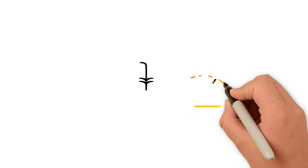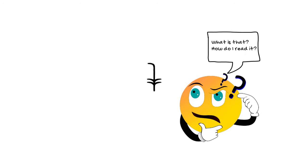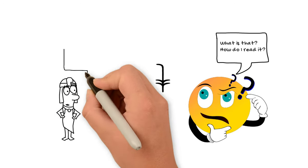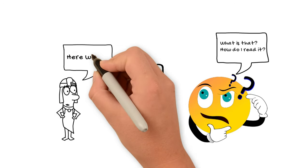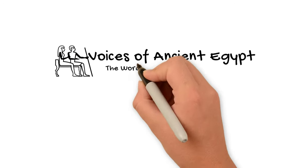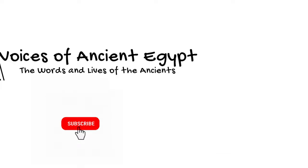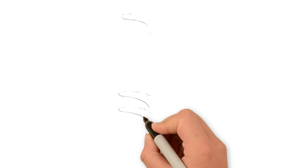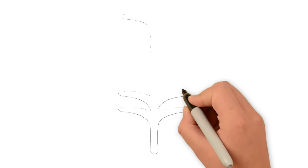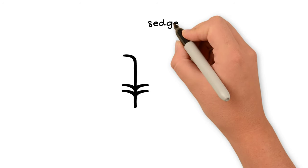So what is this hieroglyph that looks like a plant of some sort, and how was it used to describe the king in ancient Egypt? That's what we'll get into in this video today. So what is this hieroglyph? Well, you might guess it's a plant. It is what's usually called a sedge.